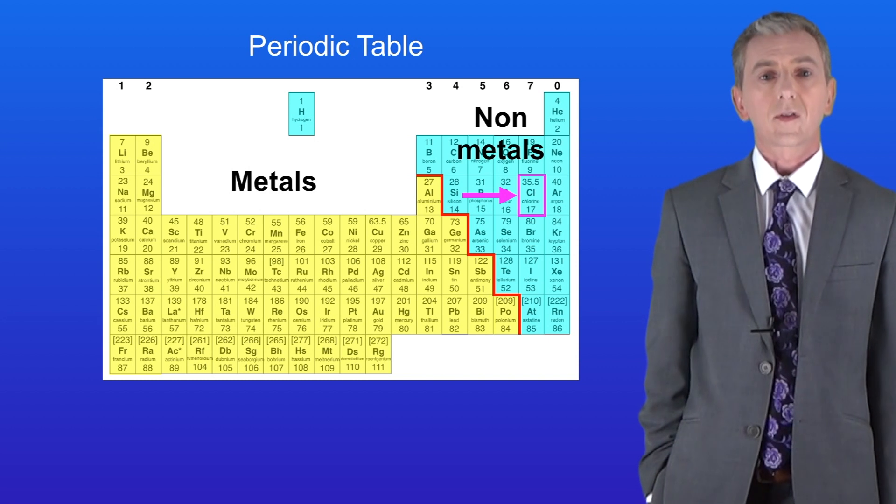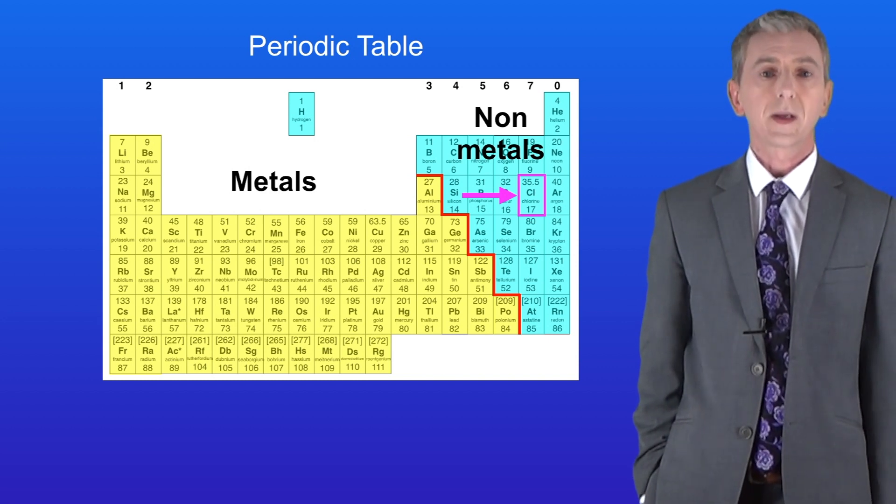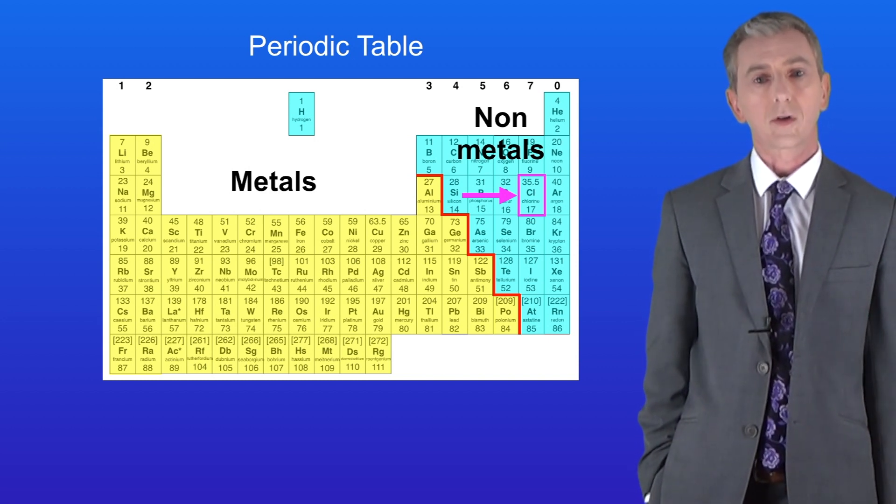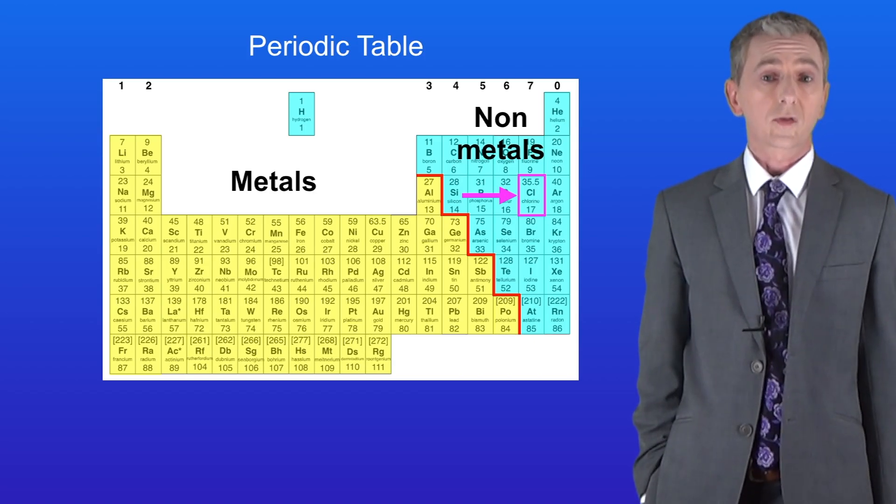An atom of chlorine has got 17 electrons in total which means that it has seven electrons in its outer energy level. We know that because it's in group 7.